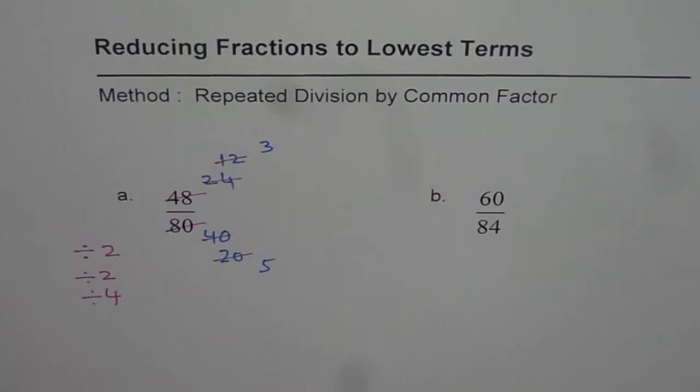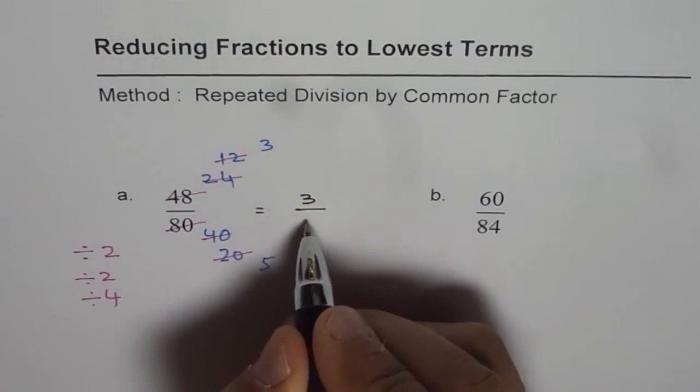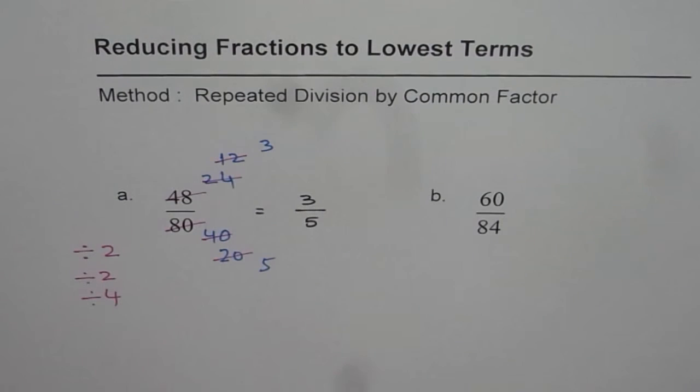Good. So that is my answer. I cannot further divide them by any number. The only common factor between 3 and 5 is 1. Both are prime numbers. So we should not even think about dividing them.